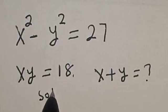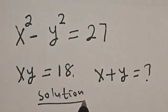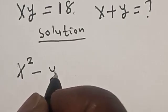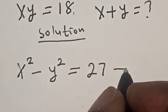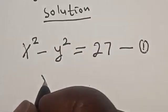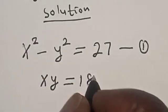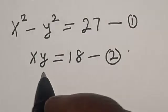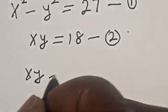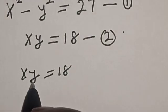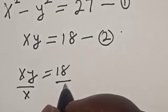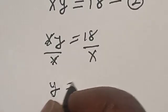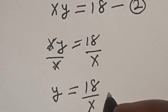Solution. We have the given equation: x squared minus y squared is equal to 27. Let's call this equation 1. Then we have xy is equal to 18. Let's call this equation 2. From equation 2, let's make y the subject of the formula. xy equals 18, so dividing both sides by x gives y is equal to 18 divided by x. Let's call this equation 3.